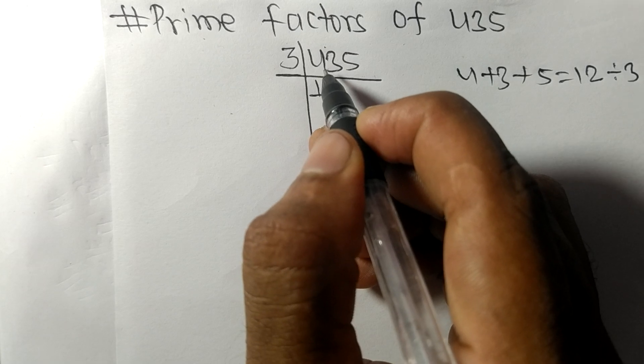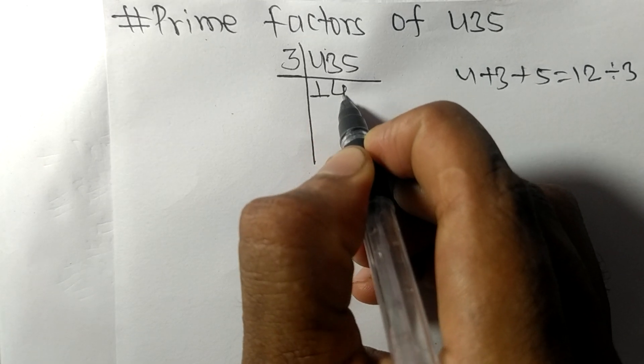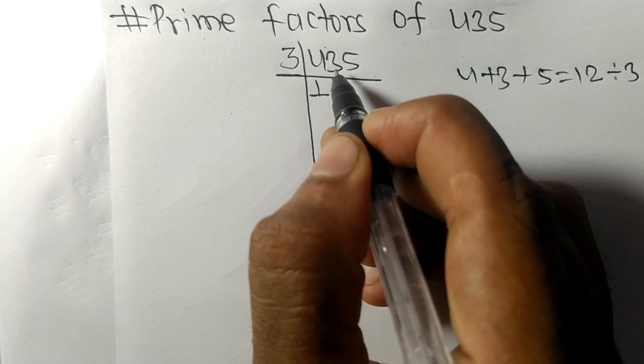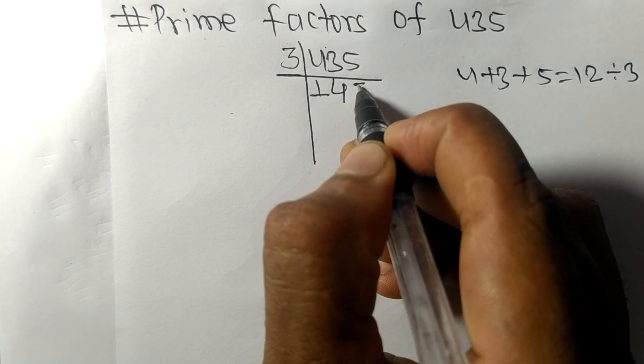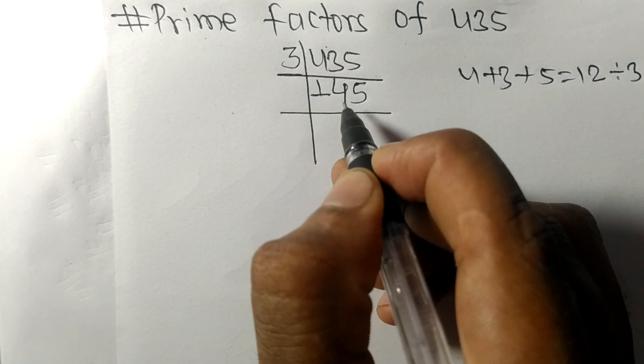So 3 times 1 mean 3, remainder 1, 1 3 is 13. So 3 times 4 mean 12, remainder 1, 1 5 is 15. So 3 times 5 mean 15. Now we got 145.